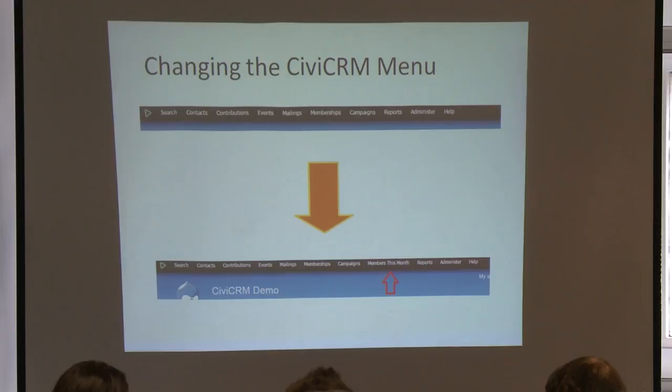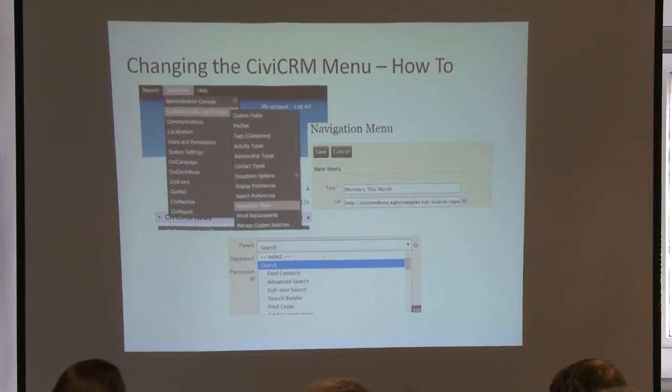Another way to customize CiviCRM is to change the CiviCRM menu. You're not using all the different menu items, and you want a new page — for example, one more accurate for your organization's needs. Say you want to add 'Members This Month,' which is like a report, and have it on the main menu. You go to Administer, Customize Data and Screens, then Navigation Menu. Then you add the title, add the URL of the page — here it's a report, but it can be any page in CiviCRM — and then decide where to include this new menu item, either under Contributions, Memberships, or on the main menu.